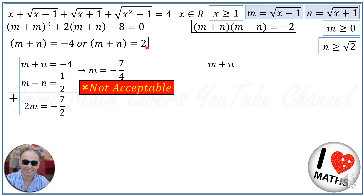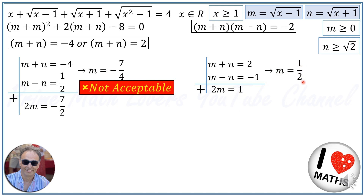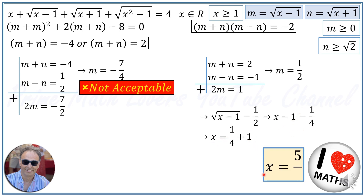The other answer is M plus N equals 2. Substituting into 2 times M minus N equals negative 2 gives M minus N equals negative one half. Adding the two equations, 2M equals 2 minus 1, which gives M equals one half. Since M equals radical X minus 1 equals one half, we raise both sides to the power of 2: X minus 1 equals one quarter, so X equals one quarter plus 1, and the answer is 5 over 4.